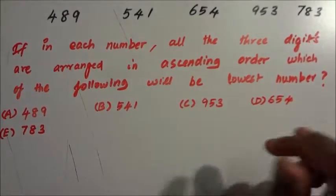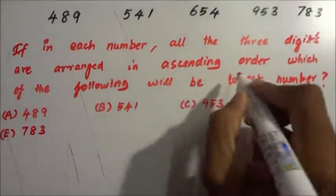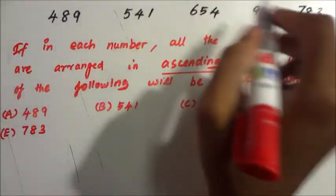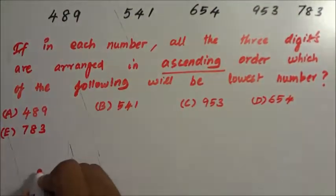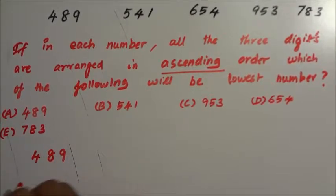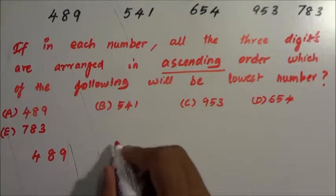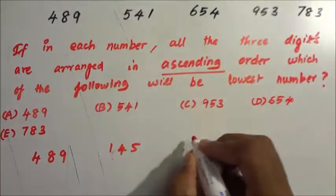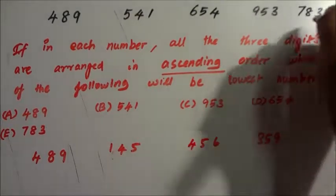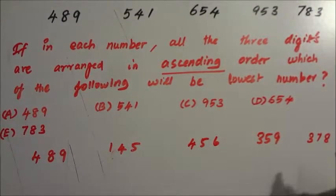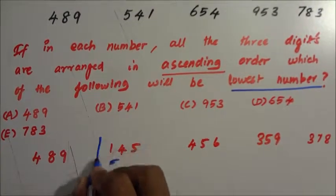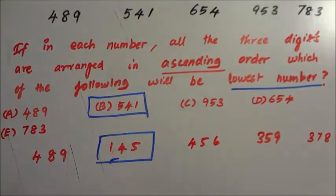Now in this question, in each number all three digits are arranged in ascending order. Which of the following will be the lowest number? Every three-digit number should be rearranged. For example, 489 stays as 489. Then 541 becomes 145. Then 654 becomes 456, and 359 becomes 359, and 378 becomes 378. Now which number is lowest? The lowest number is 145, which corresponds to original number 541. So option B is the correct answer.